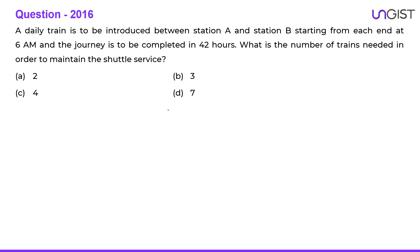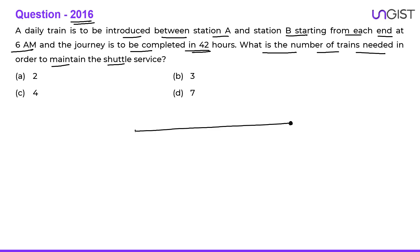The next question came in 2016. A daily train is to be introduced between station A and station B, starting from each end at 6 am. The journey is to be completed in 42 hours. What is the number of trains needed to maintain the shuttle service? There are two stations A and B, and from both stations at 6 am one train starts from A towards B and another train starts from B towards A. They take 42 hours to complete the entire distance.